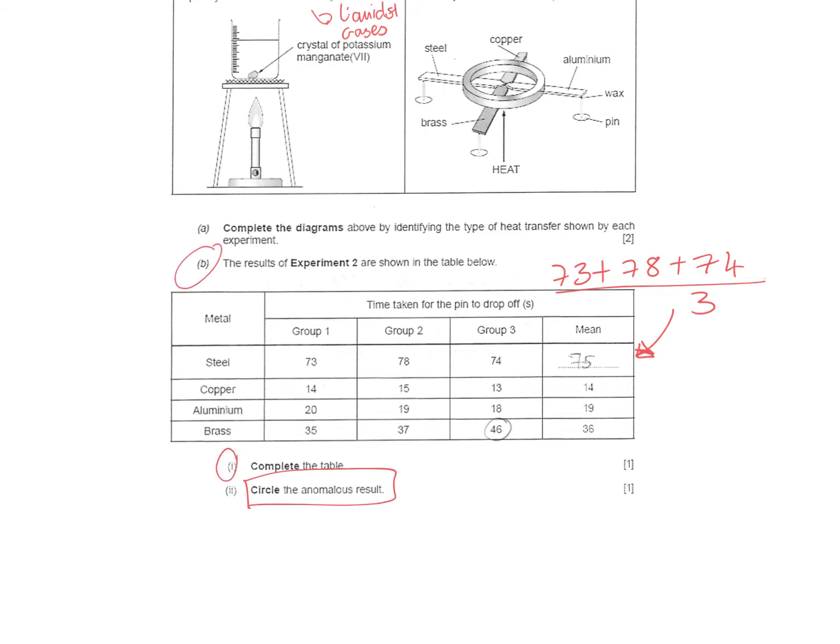Circle the anomalous result. Be careful of these because there's two marks here that people might have forgotten. Anomalous results are results that don't quite fit the trend. If you look, you've got 35, 37, this one is quite far out. Anomalous results are things that don't fit the trend.